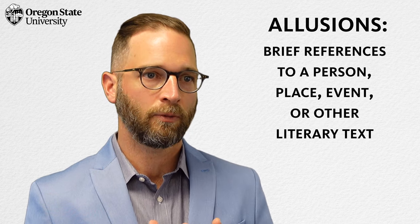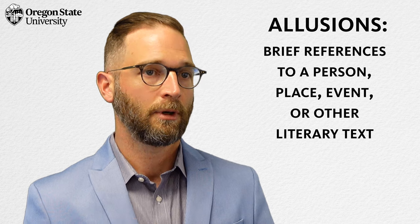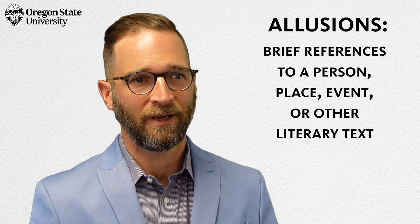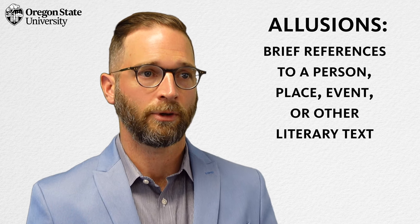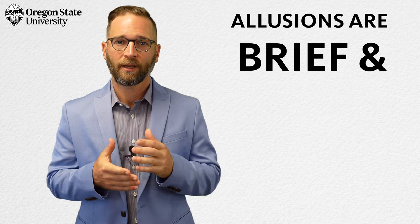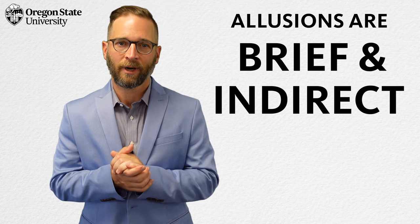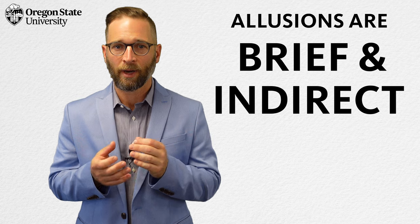Illusions are generally regarded as brief but purposeful references within a literary text to a person, place, event, or to another work of literature. Illusion is distinguished from other forms of reference by its brevity and often by its indirection, though just how indirect an illusion is can vary by a wide degree.